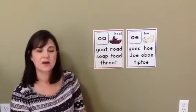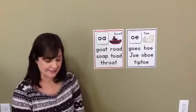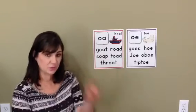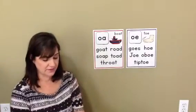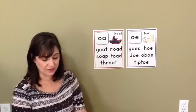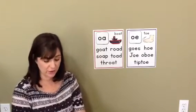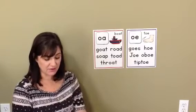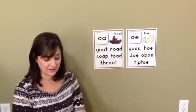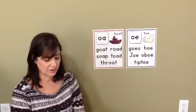Now let's talk about the diphthong vowel team OE. The diphthong OE makes one sound. It says O, like in the word toe or goes. The diphthong vowel team OE is found at the end of a word, such as foe.